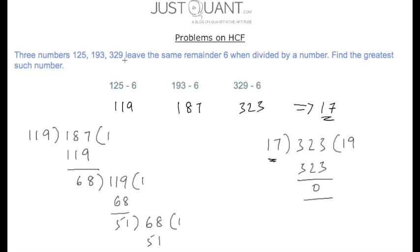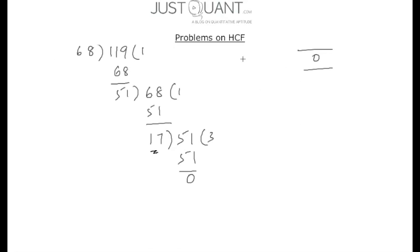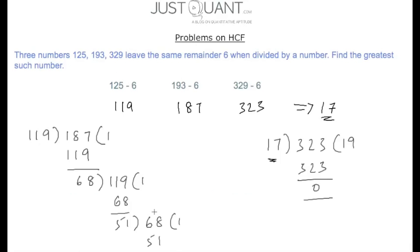Hence the greatest number that exactly divides 119, 187, and 323 is 17, which is also the greatest number that divides 125, 193, and 329 leaving remainder 6. In general, the greatest number that divides n1, n2, n3 leaving the same remainder r is the HCF of (n1−r), (n2−r), and (n3−r).